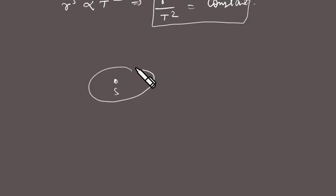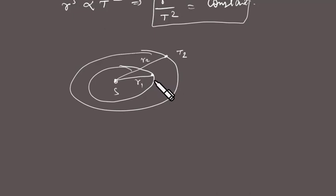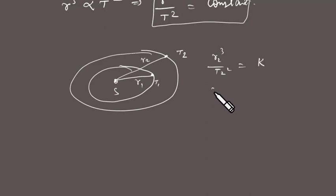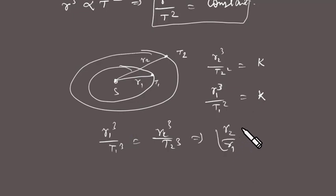Consider two planets orbiting the Sun: the first has mean distance r1 and time period T1, and the second has mean distance r2 and time period T2. Since r³/T² equals the same constant k for both planets, we have r1³/T1² = r2³/T2² = k. This can be rearranged to: (r2/r1)³ = (T2/T1)². This is a very important formula for solving numerical problems on planetary motion.